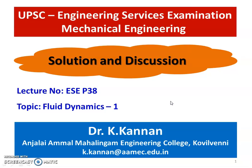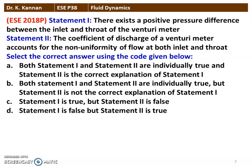We are going to take a few questions from the topic Fluid Dynamics. The first question is from the 2018 question paper. There are two statements. Statement 1: There exists a positive pressure difference between the inlet and the throat of a venturimeter. Statement 2: The coefficient of discharge of a venturimeter accounts for the non-uniformity of the flow at both the inlet and the throat section. The correct option is option B — both statements are individually true, but statement 2 is not the correct explanation for statement 1.